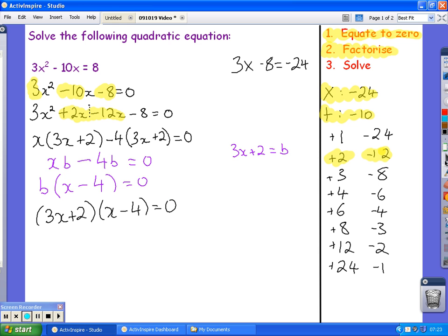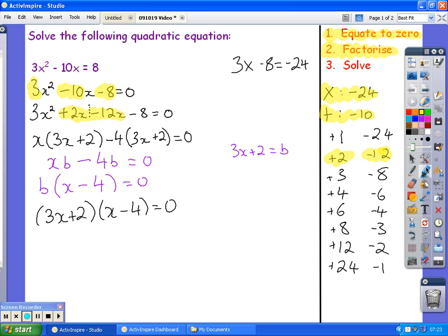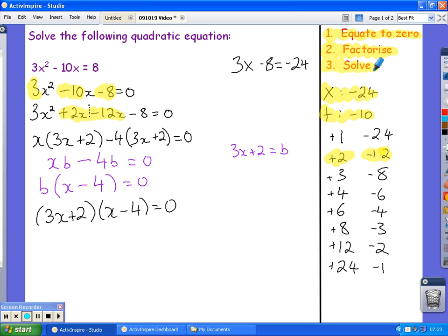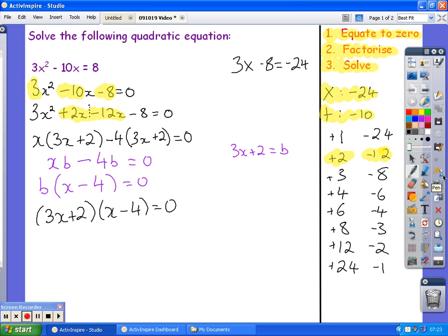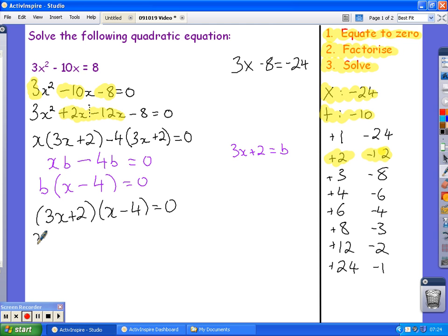Now, what do I need to do? Well, final step. I need to solve. I've got two things multiplied together. And when they're multiplied together, it gives me 0. If you multiply two things and the answer is 0, one of them must be 0. So, either 3x plus 2 is 0. Or, x take away 4 is 0. If x take away 4 is 0, then x is 4. That's nice and easy.